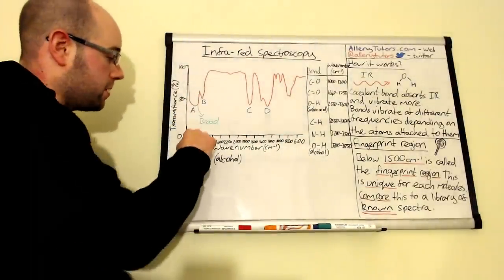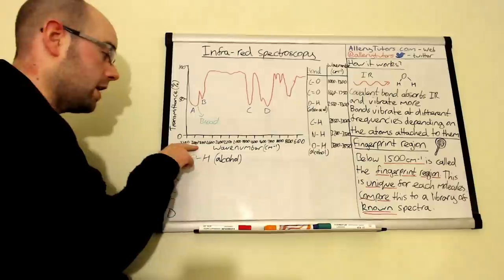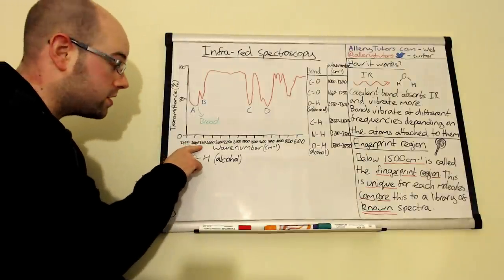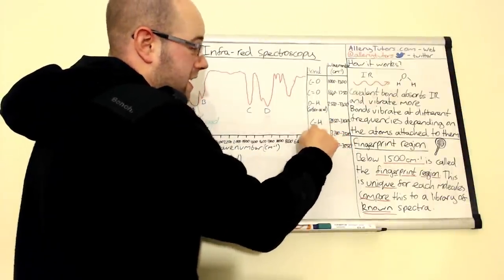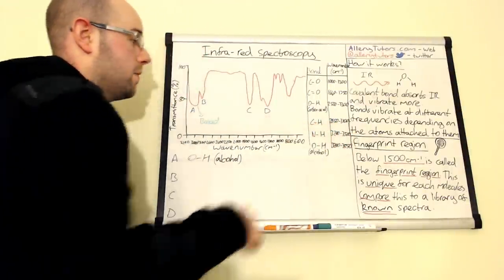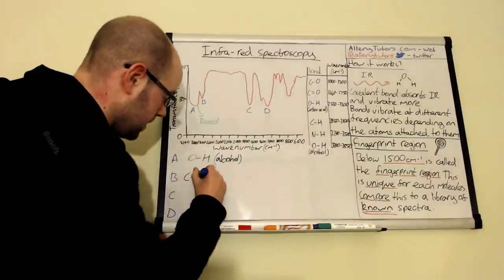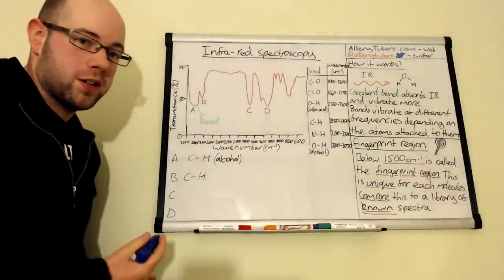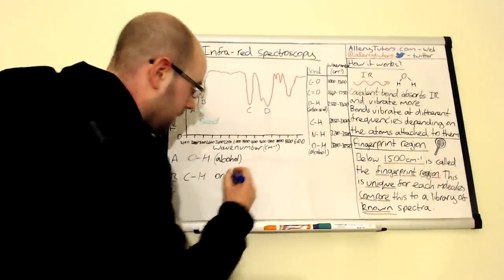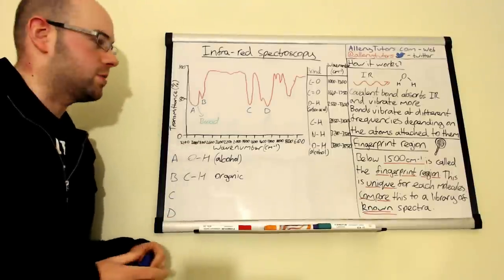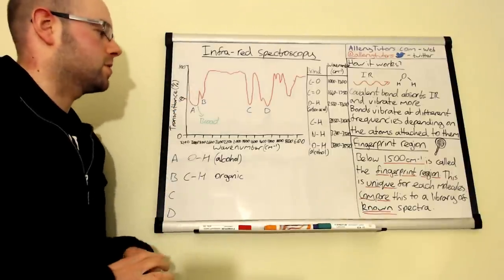Okay, if we look at B we see we get a peak at B at about 2900. So if we go around over here, 2900 would fit in here. So you can see that this molecule obviously has a CH group. That would be for most molecules, so that would be found in organic compounds for example. So CH you probably see that quite a lot. It's only a little peak so it's not very big.